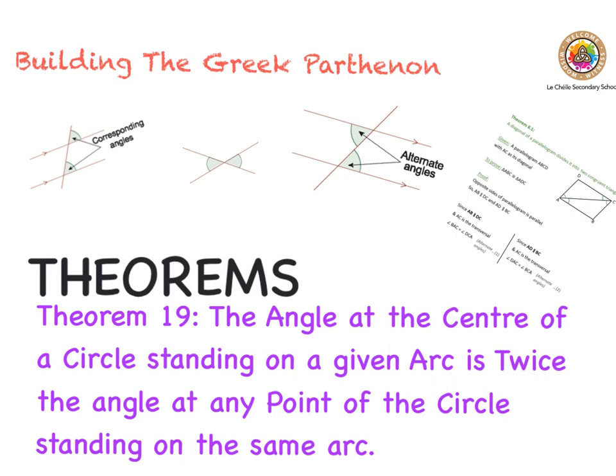Today on the Building Greek Parthenon we are looking at Theorem 19, which basically says that the angle at the center of a circle is twice the angle at any point on the circle, once they're on the same arc. We're going to look at that proof right now.